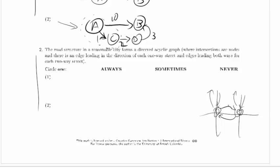So clearly this is not always—it doesn't always form a directed acyclic graph because it sometimes has cycles. We can give an example where it's false pretty easily. Let's come back to that once we know whether it's sometimes or never.